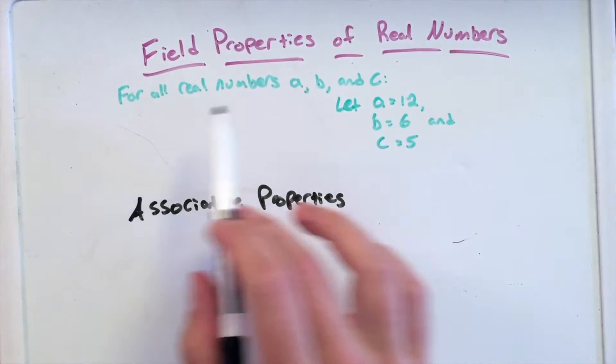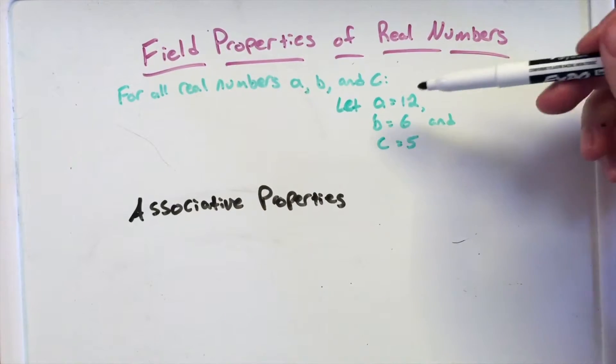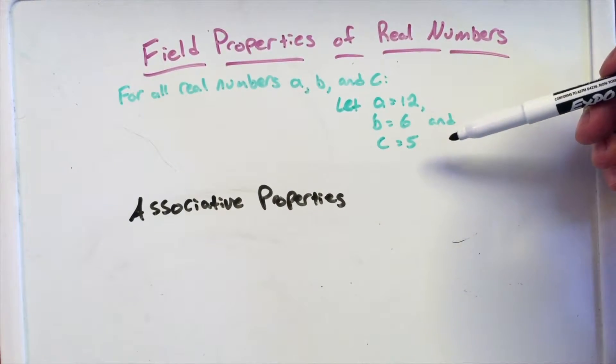The field properties of real numbers for all real numbers A, B, and C. We're going to let A equal 12, B equals 6, and C equals 5.